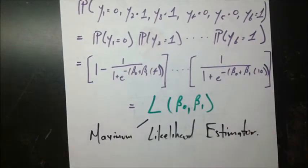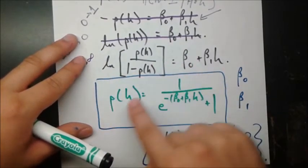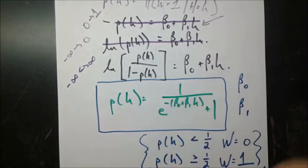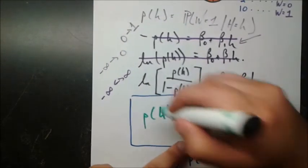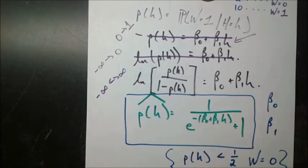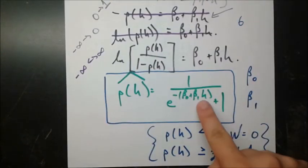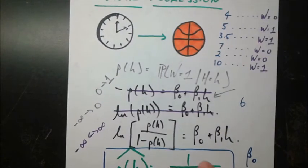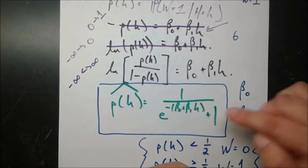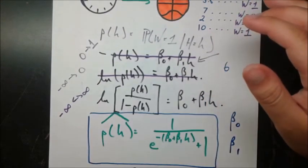Once we find beta naught and beta 1 and plug them into our model, we have the function purely in terms of H — a prediction function for the probability. Given any new team that tells us they've practiced for, say, six hours, we plug six into this H, using the beta naught and beta 1 trained on our six-team dataset, and generate some value between 0 and 1 — their predicted probability of winning that game. You can see how logistic regression is very powerful — it's calculating probabilities and telling you how likely you are to win a game, pass a test, or be classified in some category.